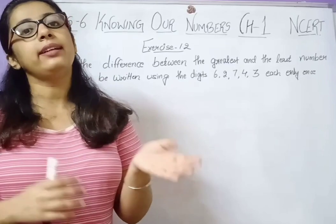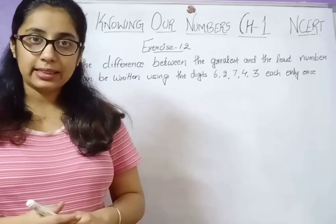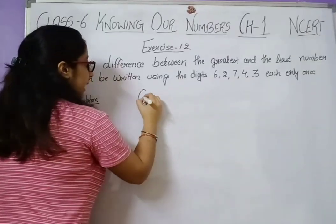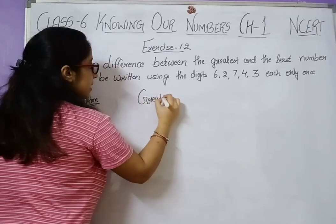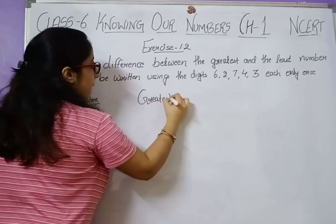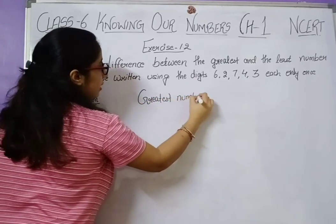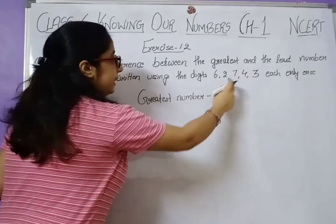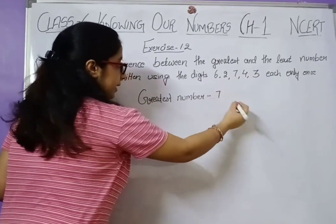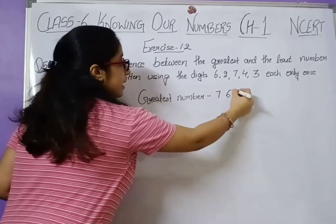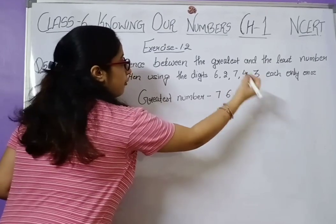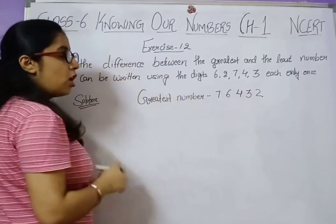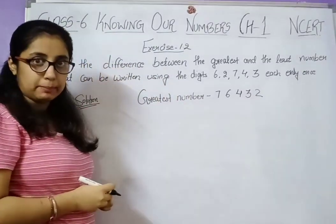Let's start the solution. First, write the greatest number. To form the greatest number from these digits, arrange them in descending order: 7, 6, 4, 3, 2. So the greatest number is 76,432.